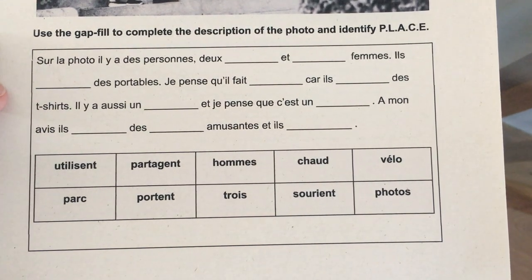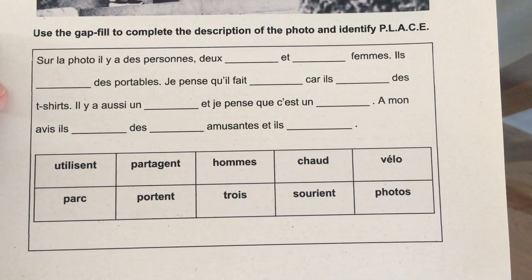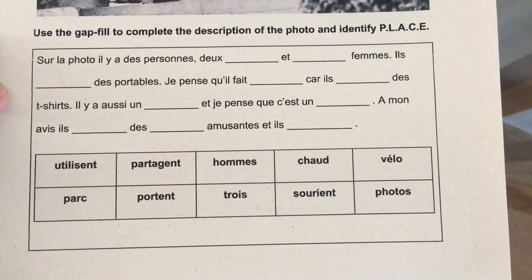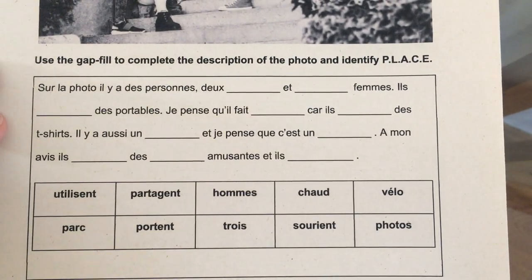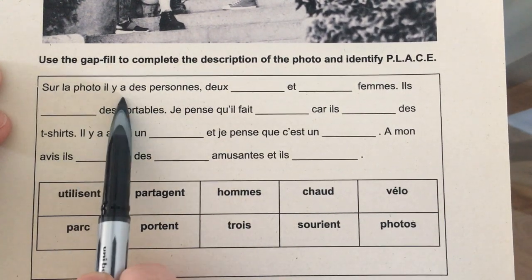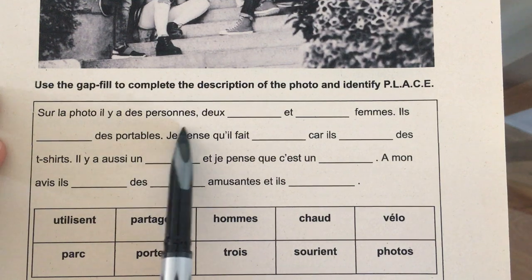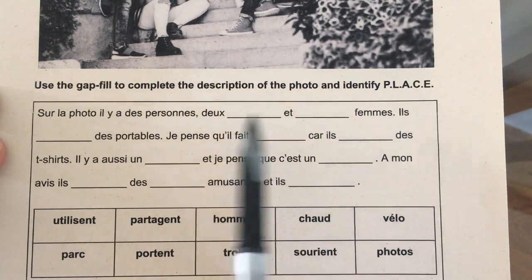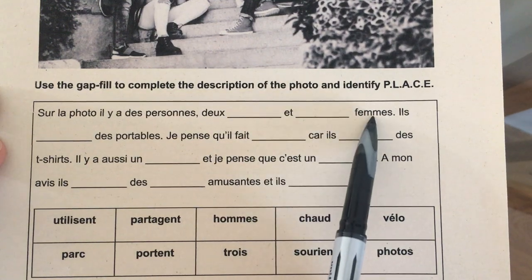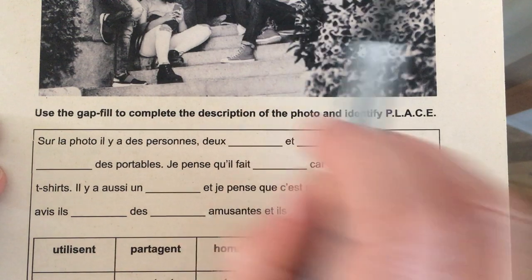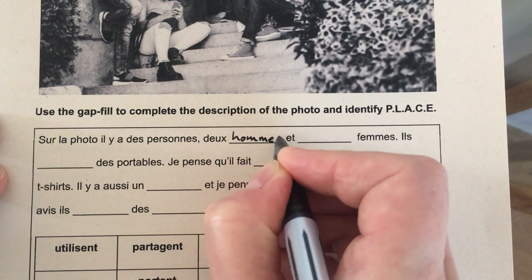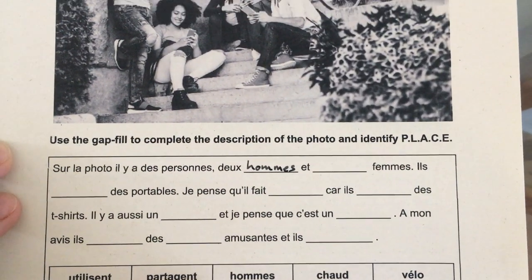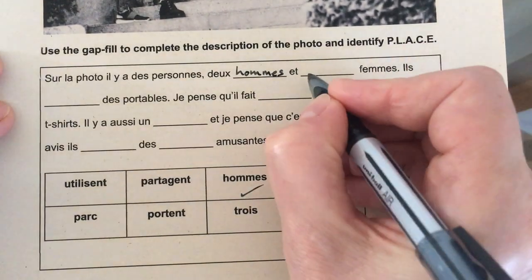I also want you to identify which bits of this activity identify the people, location, the activity, the clothes and the emotion. We're starting with 'Sur la photo il y a' — just like in the previous description I said that was a good place to start. 'Sur la photo il y a des personnes' — on the photo there are some people. 'De something et something femme' — so two something and something women. I can actually work this out: I've got two men and three women. 'Deux hommes et trois femmes.'